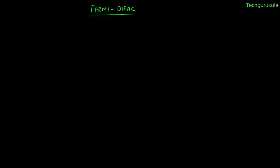In this video, we're going to talk about the Fermi-Dirac distribution function, which is given by f(E) = 1 / (1 + e^((E - EF) / kT)), where E is the energy level, EF is the Fermi energy level, T is the temperature, and k is the Boltzmann constant. The particles which obey this distribution function are called fermions, and electrons fall under that category. That's why we are discussing this topic — because electrons follow this distribution function.